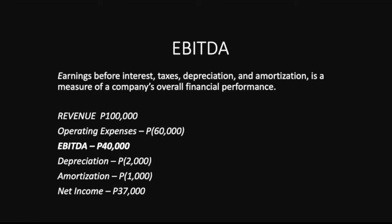EBITDA — earnings before interest, taxes, depreciation, and amortization — is a measure of a company's overall financial performance. For example, if your revenue is $100,000 and operating expenses are $60,000, your EBITDA is $40,000 — before depreciation, amortization, taxes, and other expenses are deducted. If you subtract those, the bottom line is your net income. EBITDA is used to analyze financial performance before depreciation and amortization are applied.